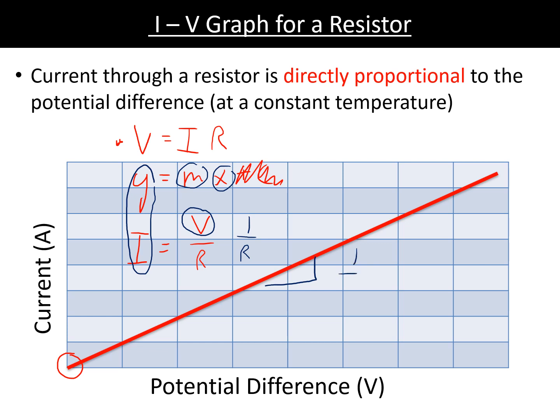So the gradient of this line would be 1 over the resistance. Okay, now this means it is an ohmic conductor. We have an ohmic conductor - follows Ohm's law - which is exactly what this does. It's a resistor, follows Ohm's law, it's a straight line through the origin.